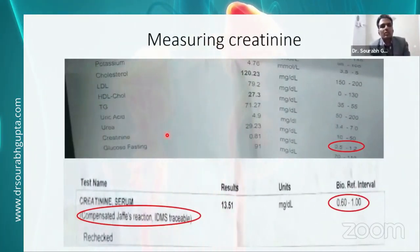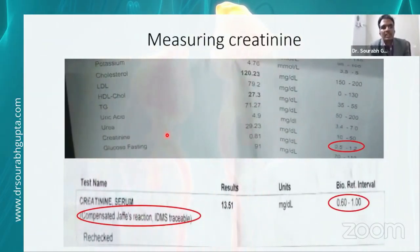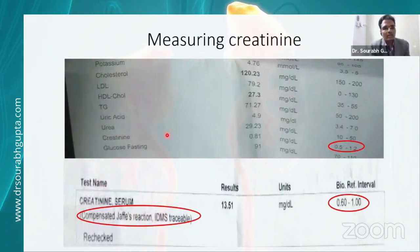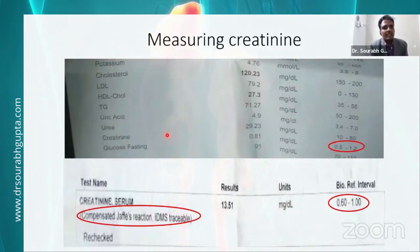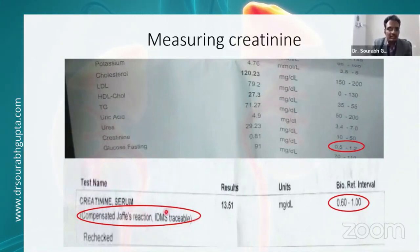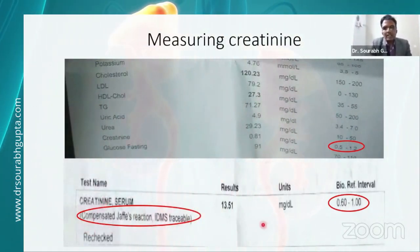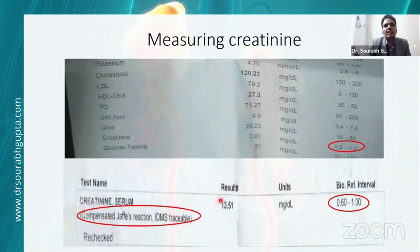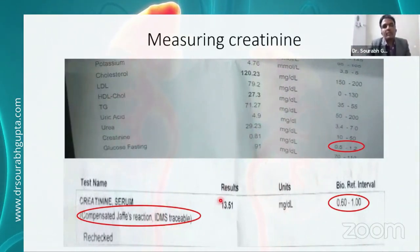Our most common available GFR marker — creatinine — has various flaws in estimation but continues to be the most common marker because testing is cost-effective. The most common test is the modified Jaffe kinetics, standardized using IDMS-traceable equations. If a lab gives you IDMS-traceable modified Jaffe kinetic results, it is reliable and standardized. If not, it might be a non-standardized lab, and this difference could lead to falsely diagnosing or missing AKI because two values were not from the same standard.